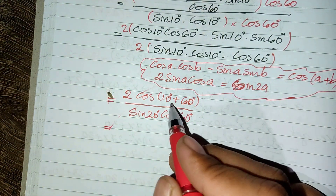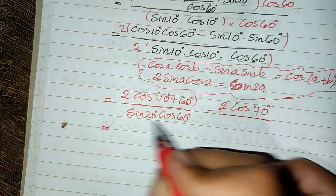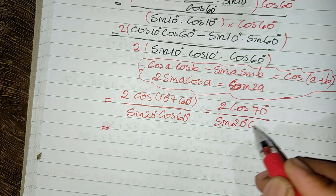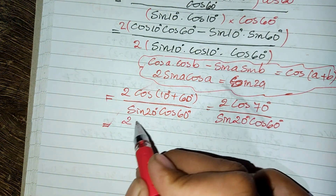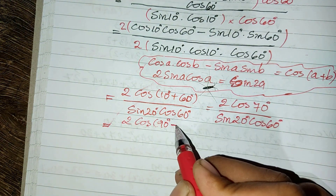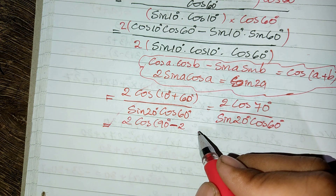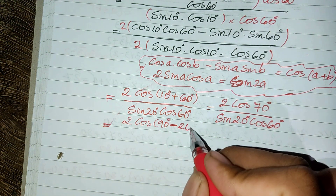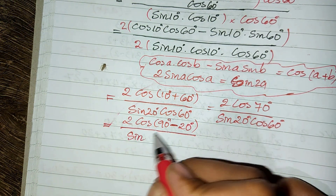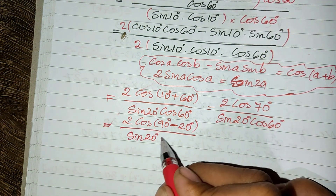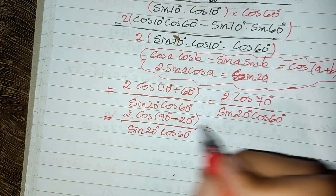So it equals cosine of 70 degrees divided by sine of 20 degrees multiplied by cosine of 60 degrees. I can also write cosine of 70 degrees as sine of 90 degrees minus 20 degrees, which equals sine of 20 degrees, divided by sine of 20 degrees multiplied by cosine of 60 degrees.